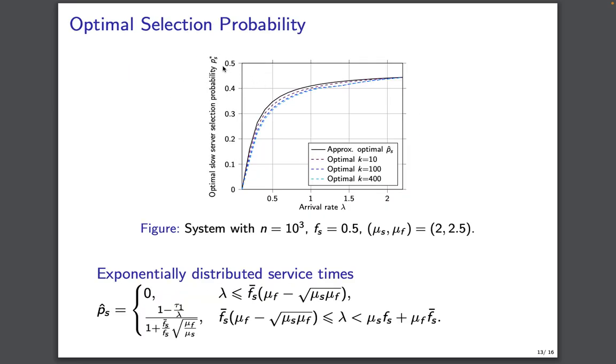We also plotted the approximate optimal slow server selection probability as a function of arrival rate. For this we calculated for exponentially distributed service time, and we also found it for shifted exponential service time. PS hat is basically the approximate optimal slow server selection probability. We see that the approximate optimal and the optimal slow server selection probability are pretty close to each other.